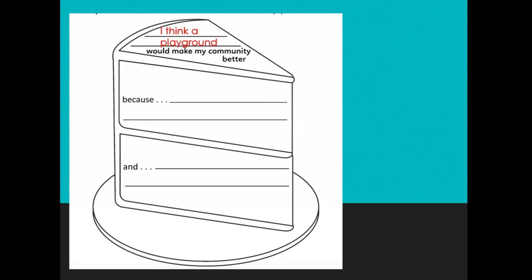So I thought that a playground would make my community better. So I filled in my graphic organizer: I think a playground. And then I came up with two reasons: because kids need a place to play and they could meet friends. So filling out this graphic organizer is going to help me today to write my sloppy copy, which was week 6 writing activity.